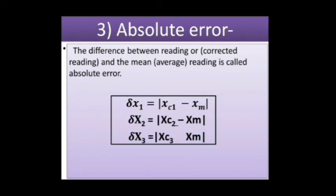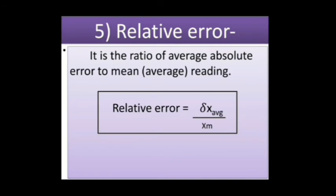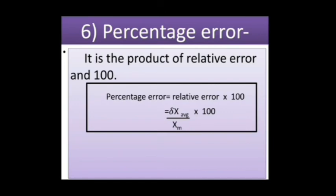To find the absolute error, use the following formula: the difference between the reading or corrected reading and the mean reading is called absolute error. The average of absolute error is called average absolute error. Relative error is the ratio of average absolute error to mean reading. Percentage error is the product of relative error and 100.